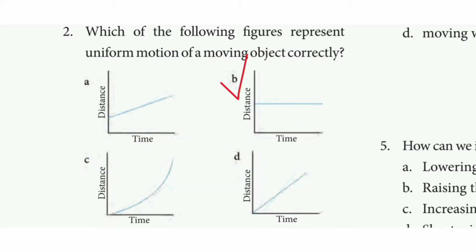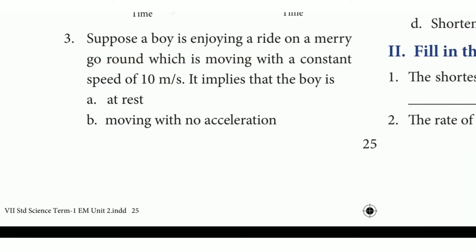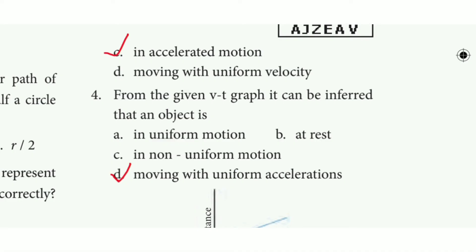Question 2: Which of the following figures represent uniform motion of a moving object correctly? The answer is option B. Question 3: Suppose a boy is enjoying a ride on a merry-go-round which is moving with a constant speed of 10 meters per second. It implies that the boy is in accelerated motion — answer is option C.